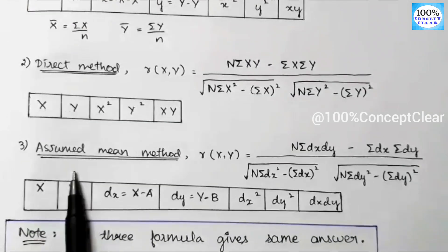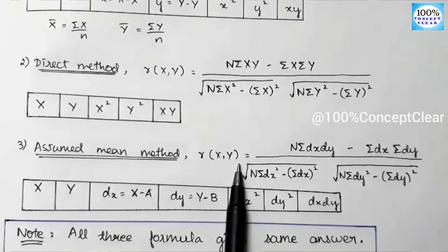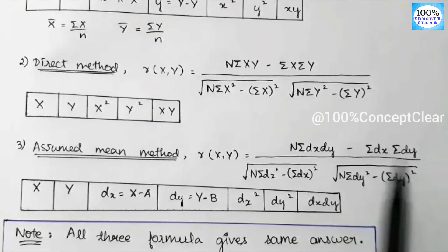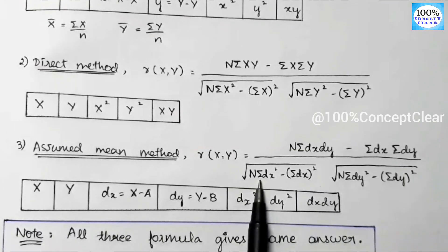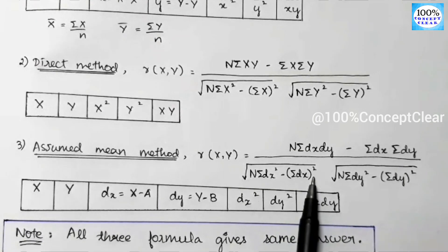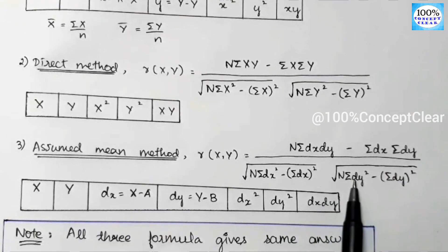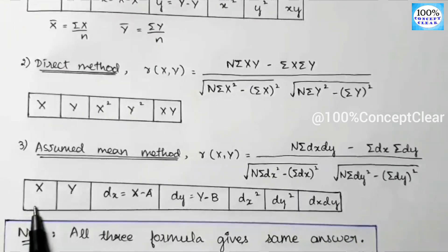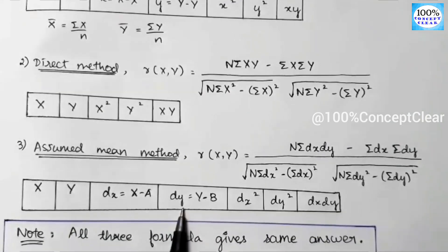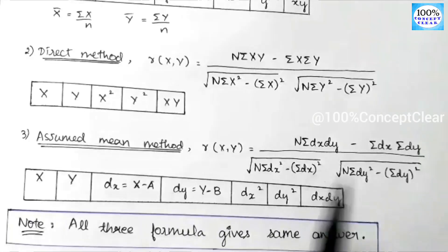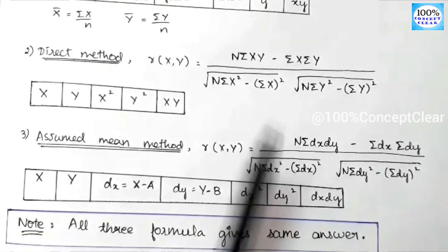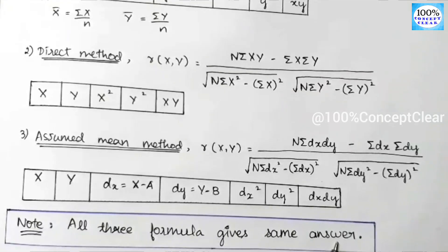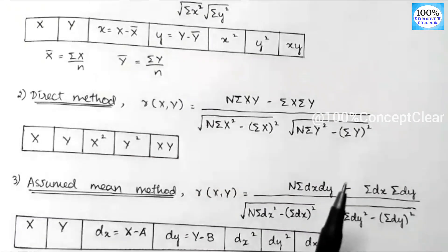The third formula is the assumed mean method. The formula is: r(x, y) = n × Σ(dx·dy) − Σdx × Σdy, divided by the square root of [n × Σdx² − (Σdx)²] multiplied by the square root of [n × Σdy² − (Σdy)²].